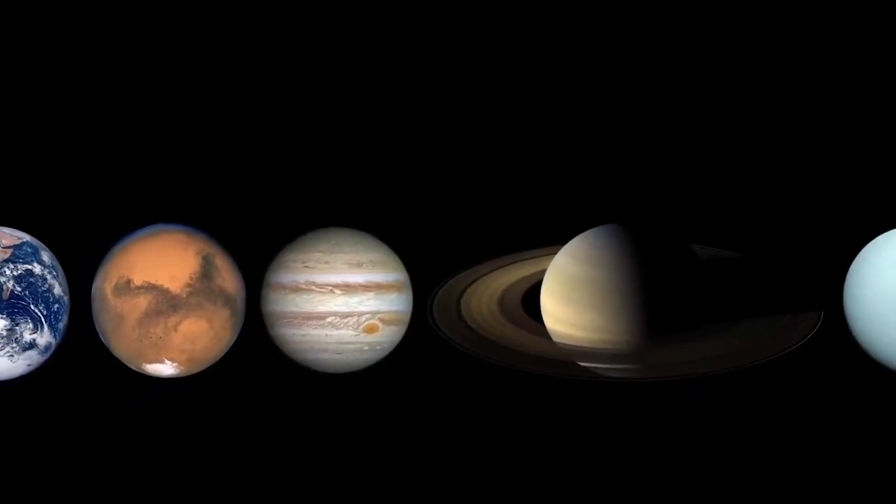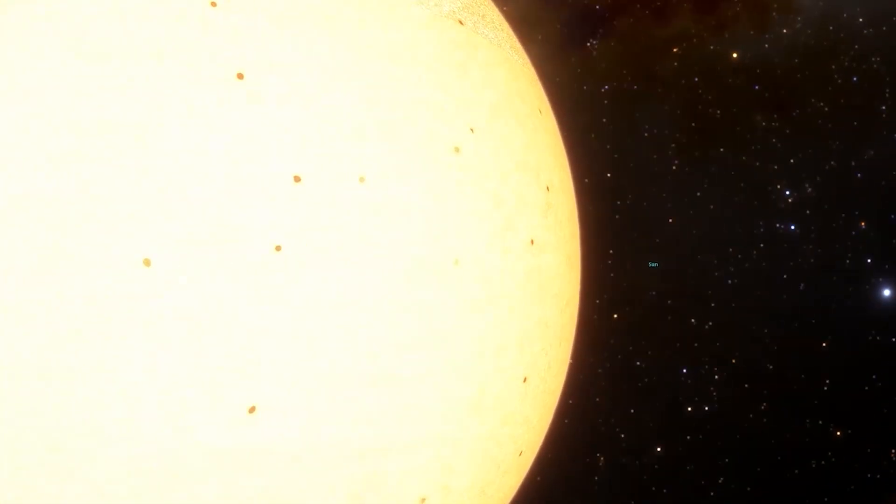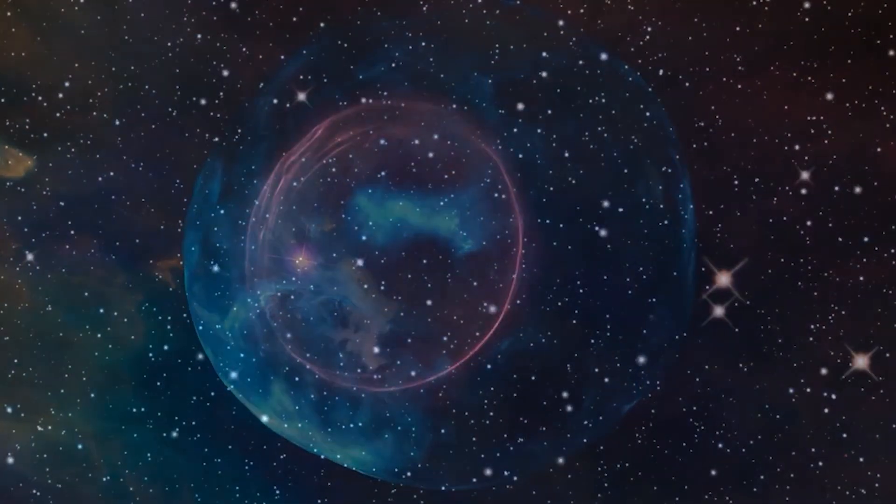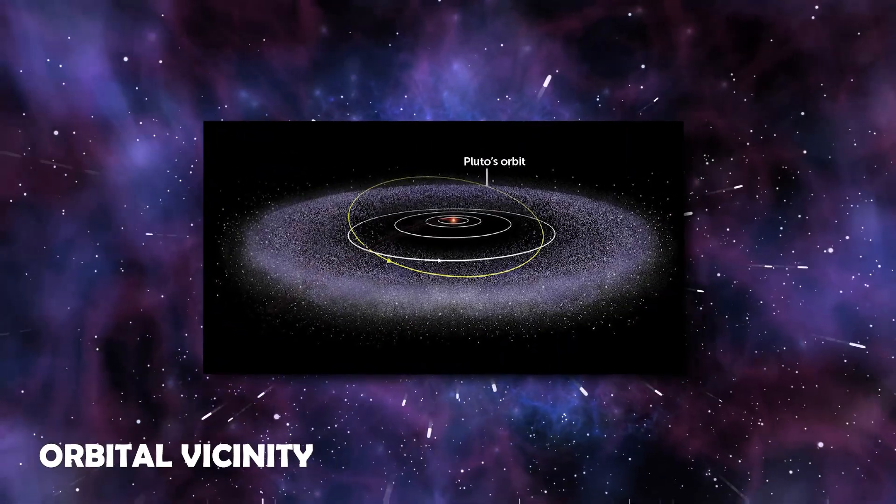According to the International Astronomical Union (IAU), a planet is a celestial entity that revolves around the sun, has an appearance that is nearly spherical, and has cleared junk from its orbital vicinity.